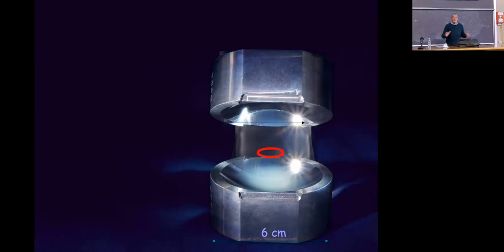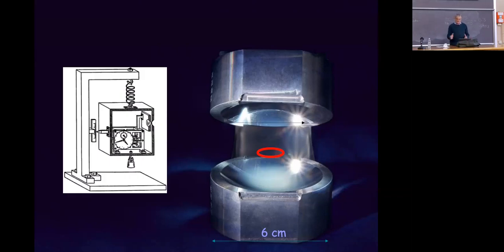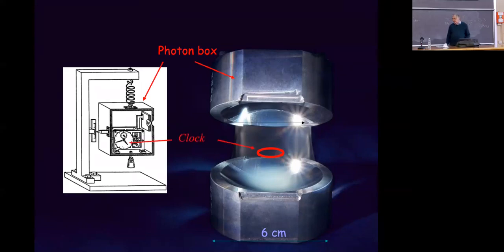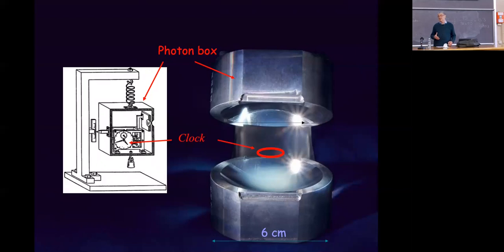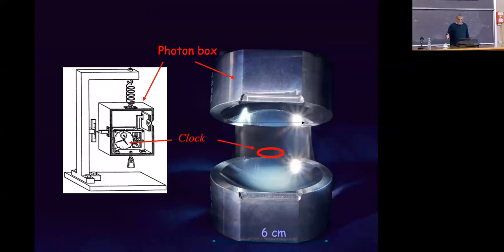We can make a connection with the thought experiment of Einstein and Bohr. You see here the photon box on the left and our cavity on the right. Of course the cavity is the photon box — it's mirrors which keep the photon trapped. In the Einstein-Bohr experiment a very important element was the clock, which triggered the opening and closing of a shutter. Here we also have a clock: the atom which goes across the cavity is an atomic clock, and the measuring device is based on the Ramsey interferometer — exactly the same kind of interferometer you have in cesium clocks — working in the microwave domain exactly like the cesium clock.